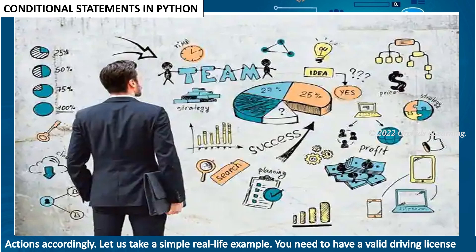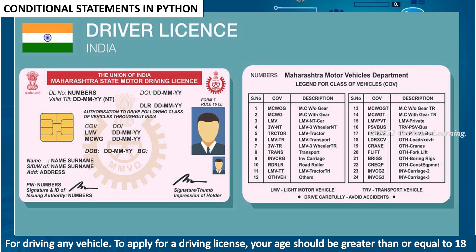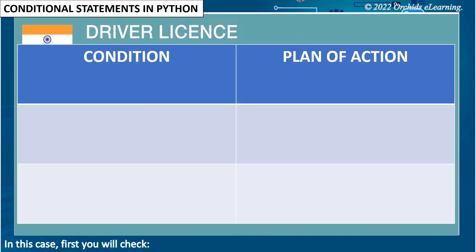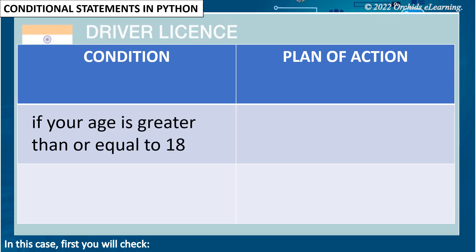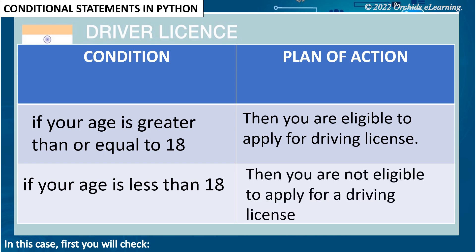Let us take a simple real-life example. You need to have a valid driving license for driving any vehicle. To apply for a driving license your age should be greater than or equal to 18. First you will check if your age is greater than or equal to 18 — then you are eligible to apply. If your age is less than 18, then you are not eligible to apply for a driving license.